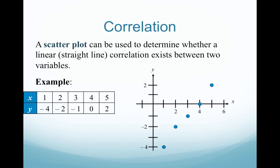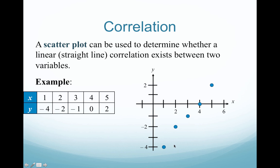Here's a simple example. We have X or independent variables of 1, 2, 3, 4, 5, and some response variables correlating to those X variables. I'm just going to plot them on the graph. Looking at these blue dots, we can see we have a rough linear relationship here.